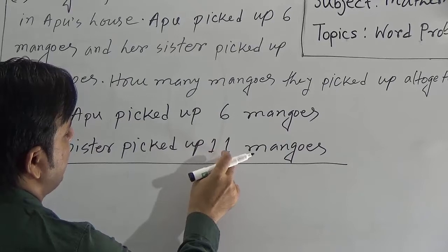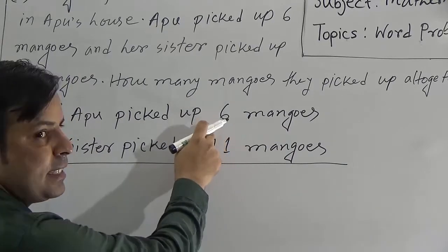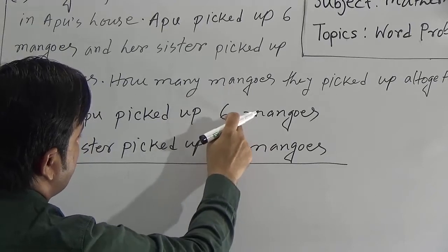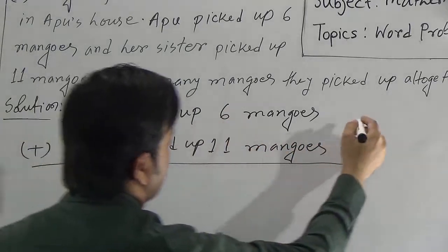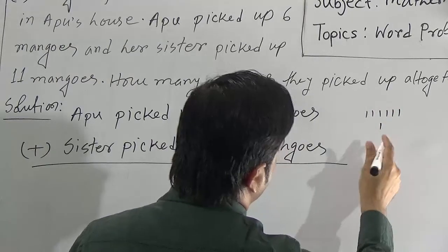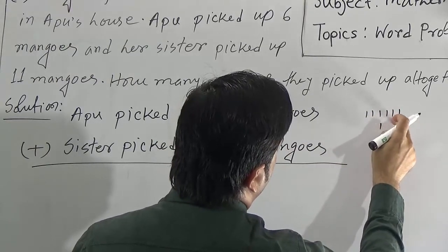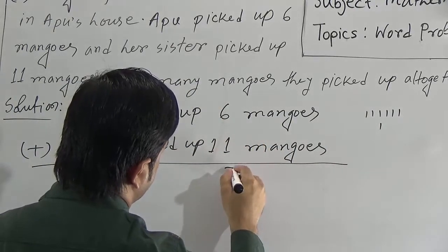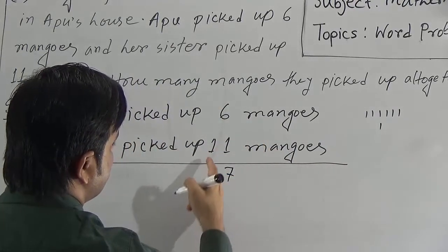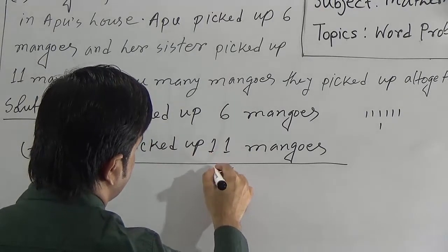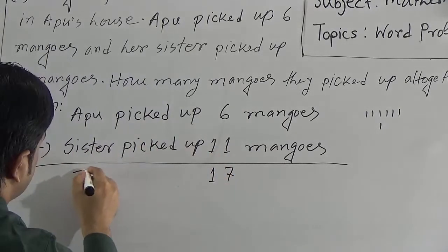Here 11 is a 2-digit number and 6 is a single-digit number. So first we add the ones place: 6 and 1. Counting: 1, 2, 3, 4, 5, 6 and 1 more — 7. So 6 plus 1 equals 7. Now go to the tens place. The tens place has only 1 here, so it remains 1. Therefore, the total is 17 mangoes.